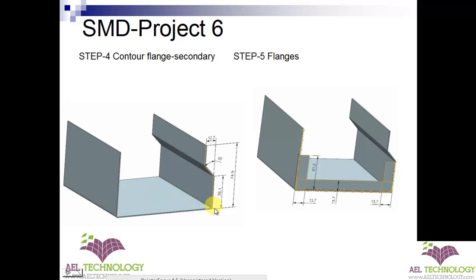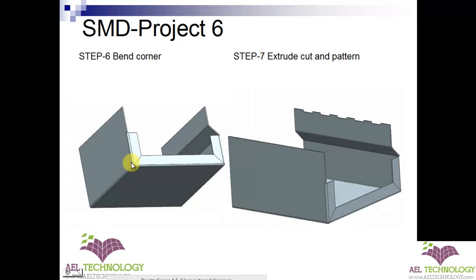Then we will create a contour flange of entire width with the specified dimensions. Next we will go to flanges with specified length and depth. Once we enter that, we will get this type of flange, and next we need to create a mitered corner using the bent corner method. After that, we will be creating a cut pattern — an extrude cut and a pattern — which is a platform for creating the hem flange.